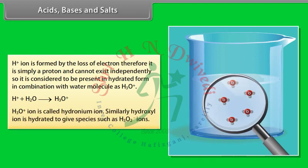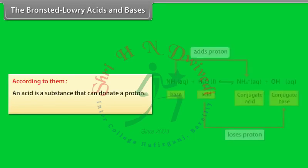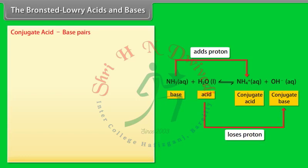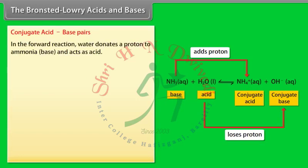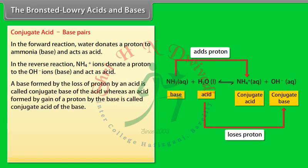H₃O⁺ is called the hydronium ion. Similarly, hydroxyl ion is hydrated to give species such as H₃O₂⁻ ions. According to Brønsted-Lowry, an acid is a substance that can donate a proton and a base is a substance that can accept a proton. In the forward reaction, water donates a proton to ammonia and acts as an acid; in the reverse reaction, NH₄⁺ ions donate a proton to OH⁻ ions and act as an acid.